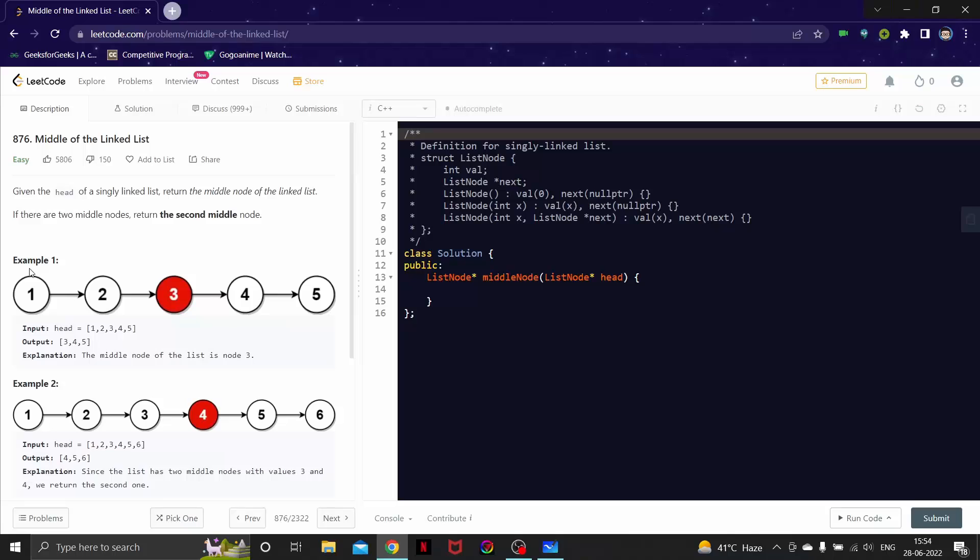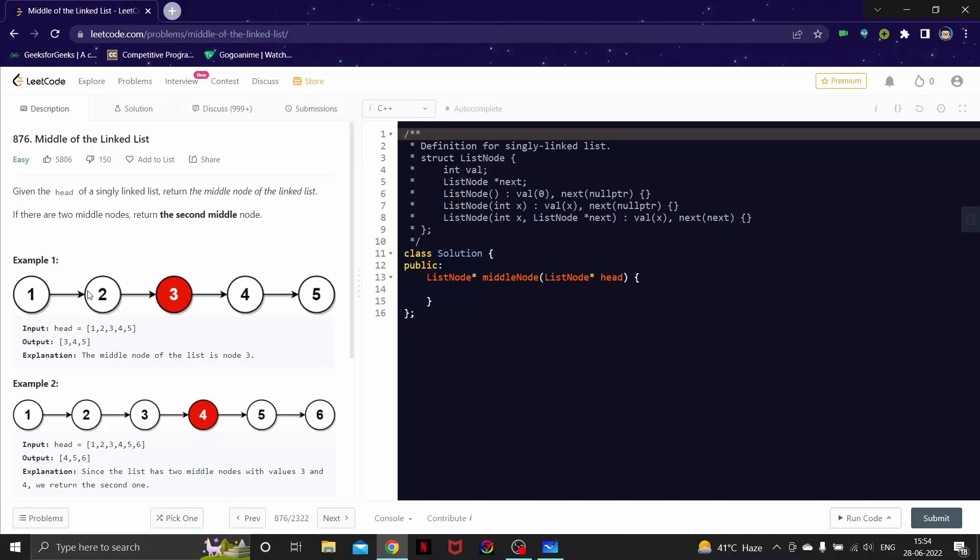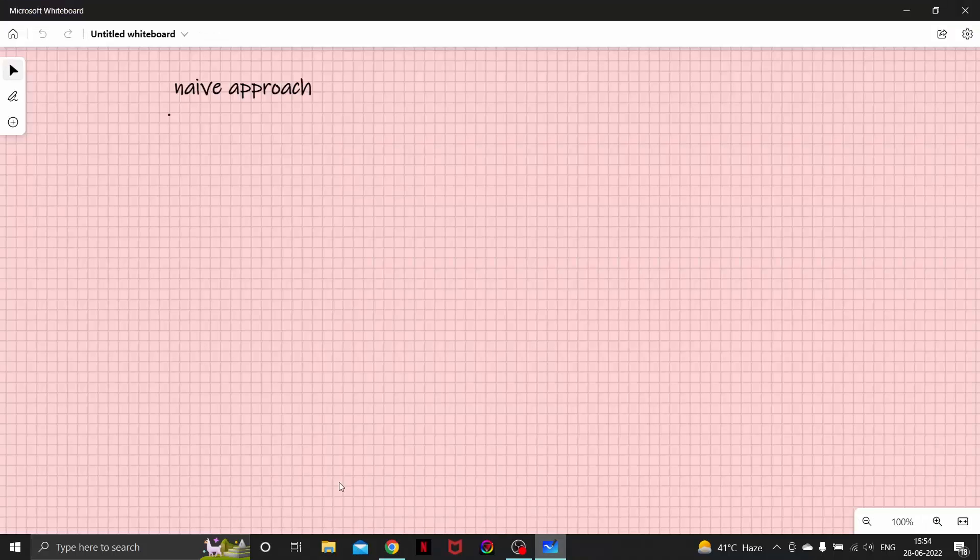Let's see our example one. Suppose this is our linked list: one, two, three, four, five. And we have to return this element, so output is going to be this. And if this is our linked list, then we have to return this one. So can you think of how to solve this problem?